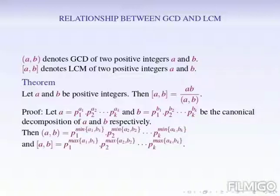Then GCD of two integers can be expressed as p1^min(a1,b1) times p2^min(a2,b2) times ... times pk^min(ak,bk). And LCM is p1^max(a1,b1) times p2^max(a2,b2) times ... times pk^max(ak,bk).